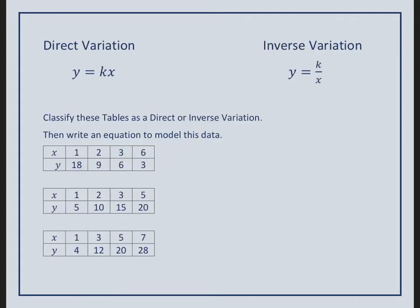The equation for direct variation is y equals kx. As x increases, y is also going to increase. This would be an example of direct. Inverse variation equation is y equals k divided by x. As x increases, y is going to decrease.